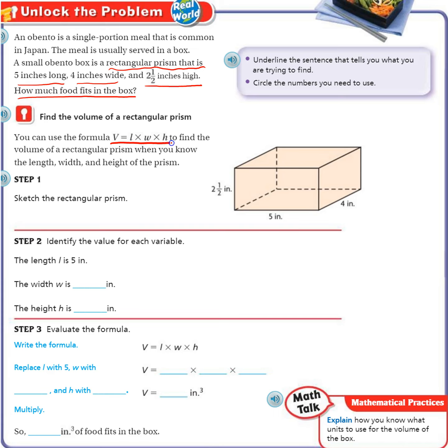So this is a volume problem, length times width times height. You're essentially taking these three numbers and multiplying them. Identify the value for each variable. The length is 5, the width is 4, and the height is 2.5.